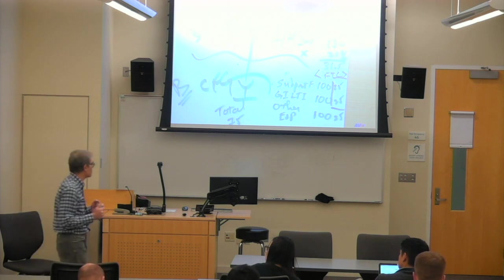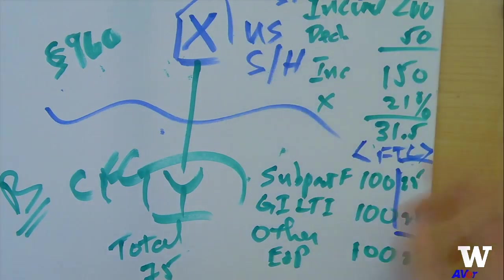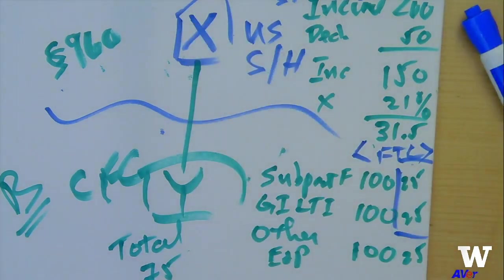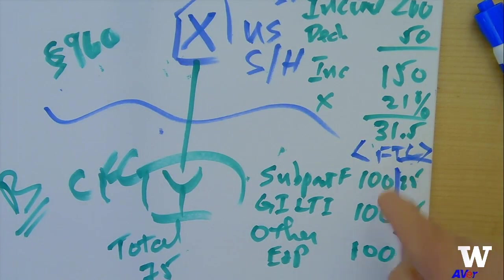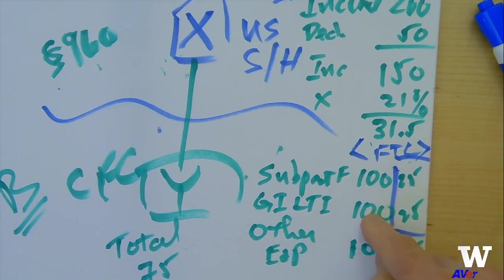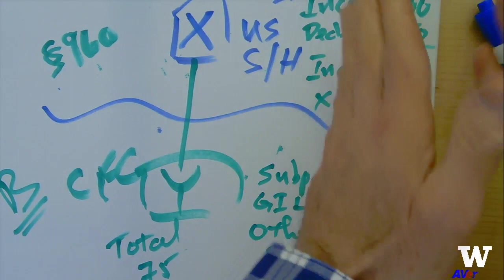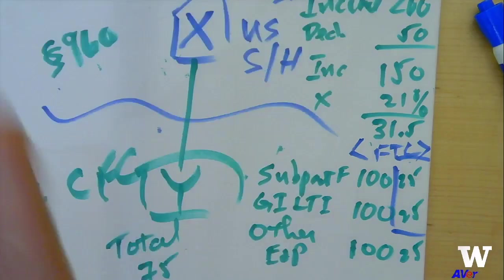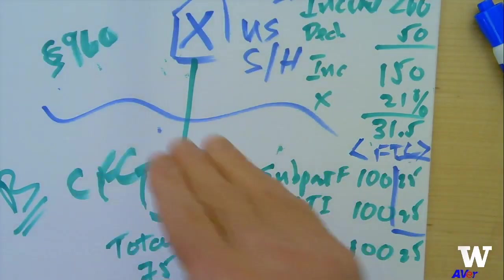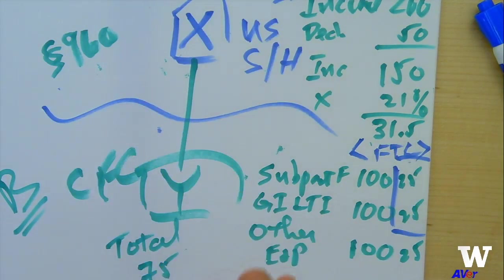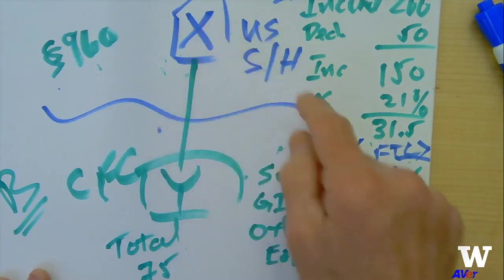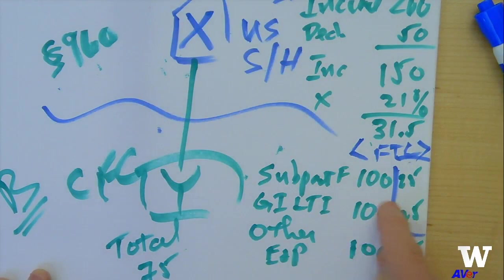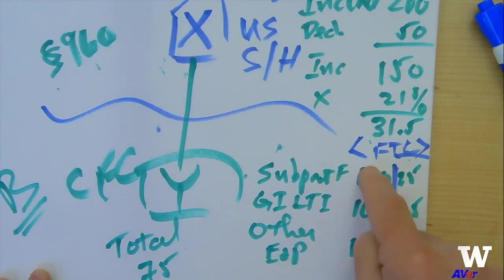What does that mean? Here in this example, X has recognized currently 100 of subpart F income and 100 of GILTI. It's also accounted for the foreign tax credit and the Section 78 gross up. But just looking at Y and the E&P situation, it has already accounted for and treated as income at the X level this 200 from subpart F and GILTI.